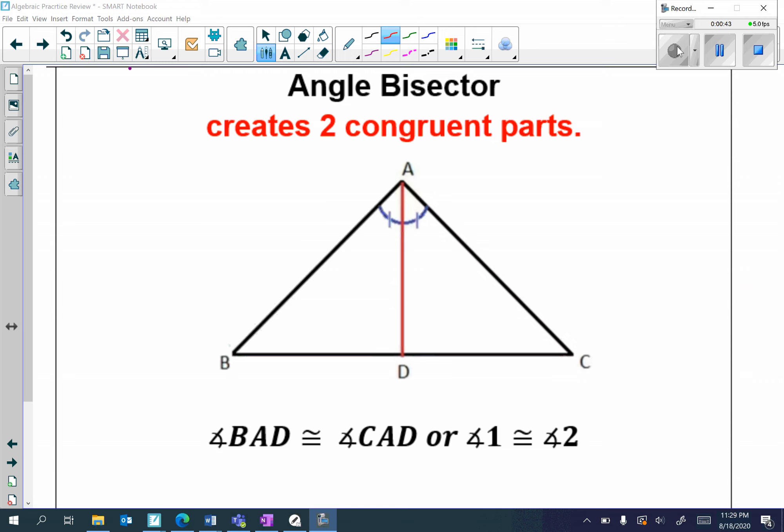Next, we have an angle bisector. An angle bisector creates two congruent parts. So, for example, I have angle BAC, and I have AD cutting that angle into two congruent parts.